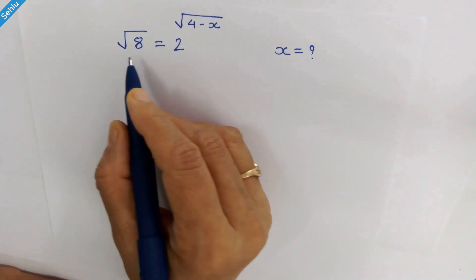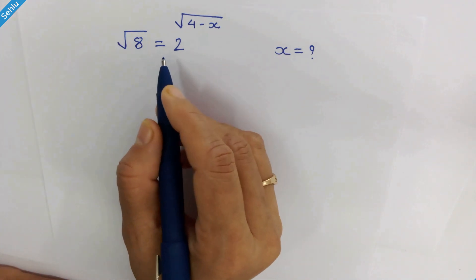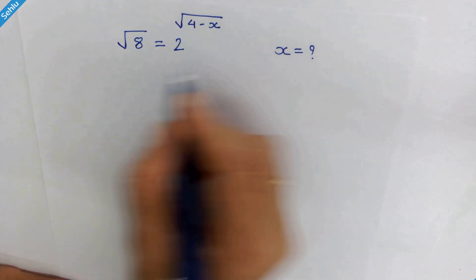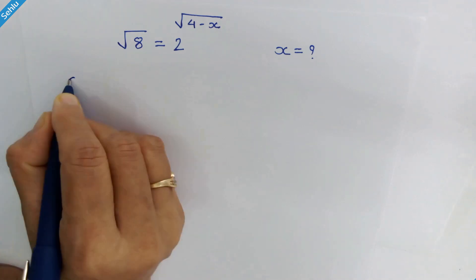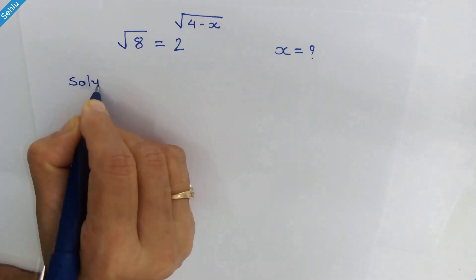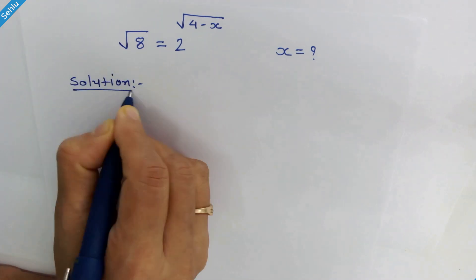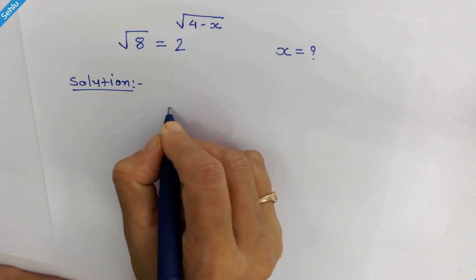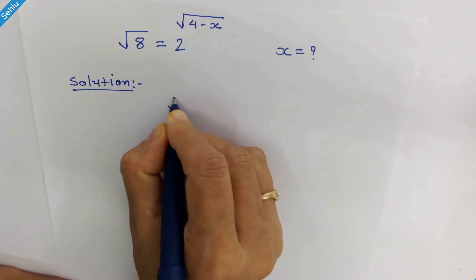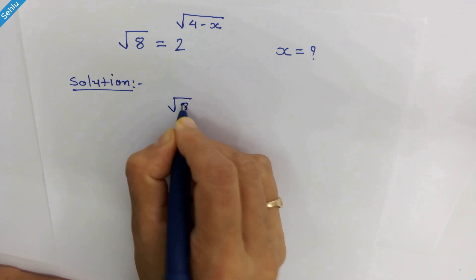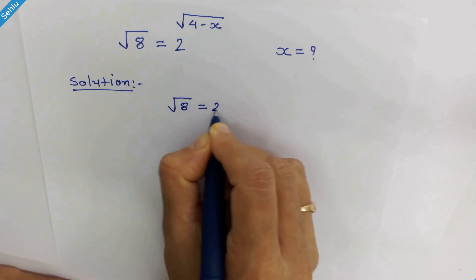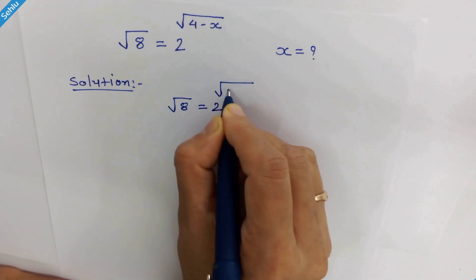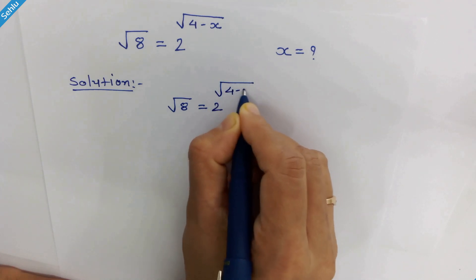Hello friends. This is our question and let's solve for x. Our equation is: square root of 8 is equal to 2 raised to the power of square root of (4 minus x).